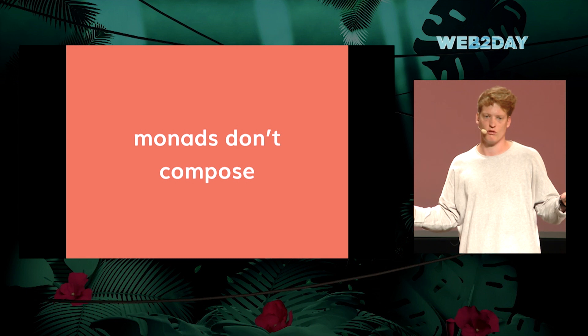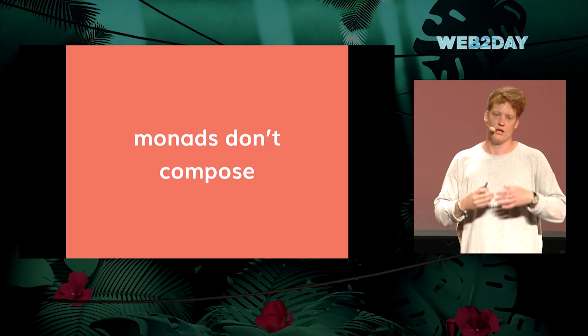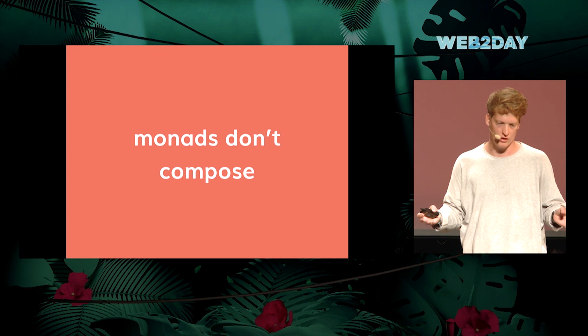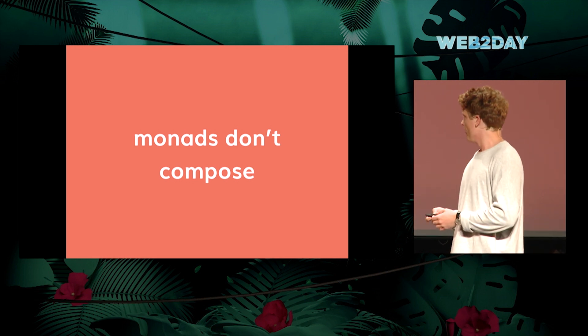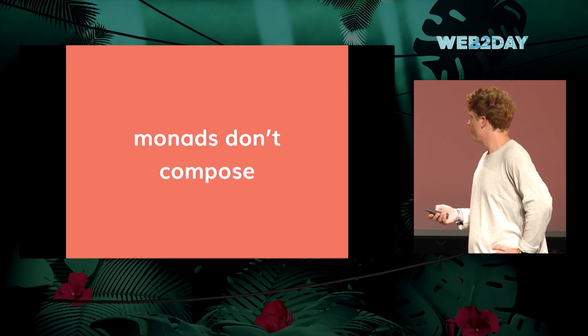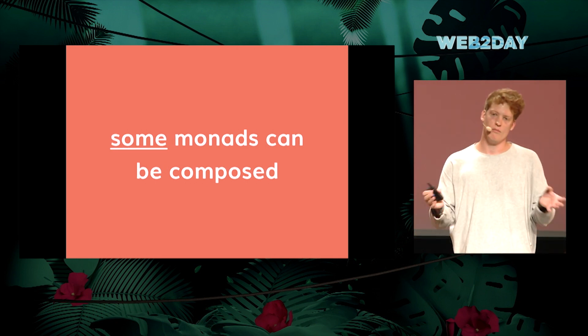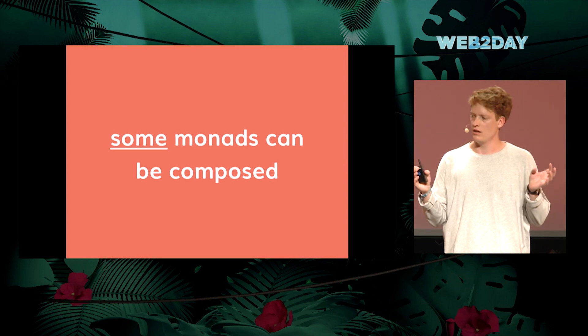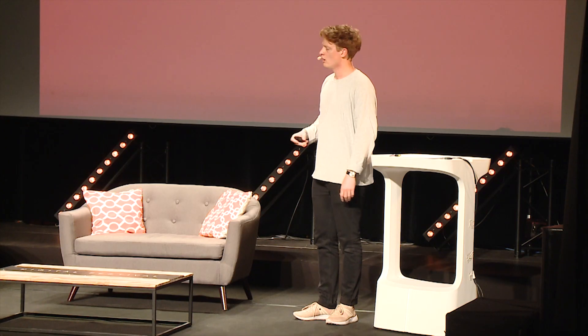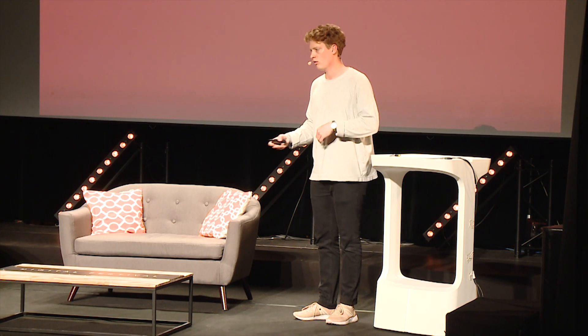Which is sad, but luckily some people found out that while Monads might not compose in general, you can take some Monads and make sure that they compose — and that's the underlying idea of Monad Transformers. For each of these composable Monads, you write a Monad Transformer called Monad T, so it's OptionT for Option, EitherT for Either, and then you can use these Transformers to smack Monads together.